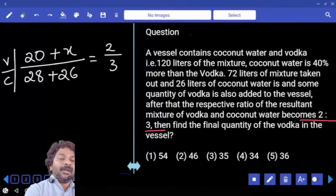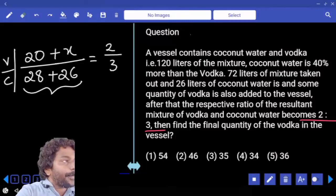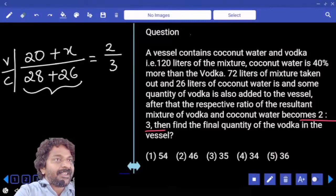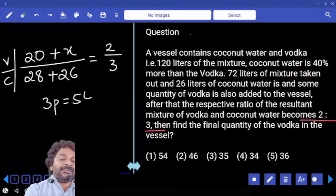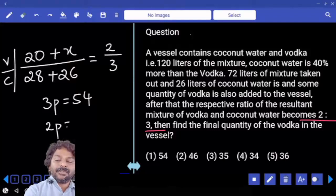That is 2 by 3 only. This value is 54, which is equal to 3 parts. If 3 parts is equal to 54, each part is 18. Then 2 parts value? 36.